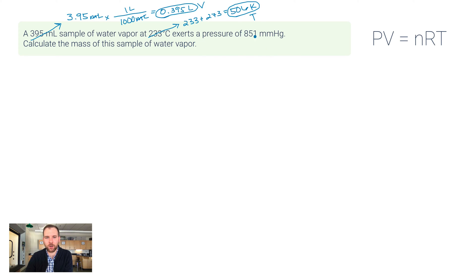And then it says exerts a pressure of 851 millimeters of mercury. 851 millimeters of mercury, I want to multiply by one atmosphere over 760 millimeters of mercury, because that's my conversion factor between these two. I end up with 1.12 atmospheres.